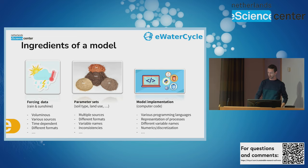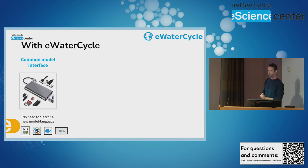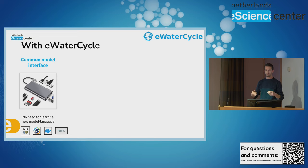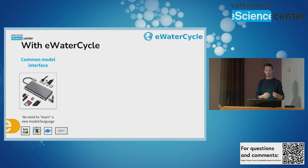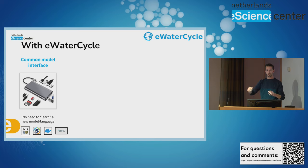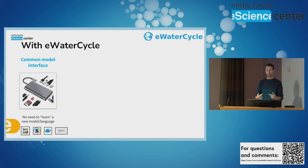That's what we're trying to address in eWaterCycle. First, we have a common model interface. For those not familiar with the technologies, this means you can talk to your model from within a Python notebook and exchange it for another model — the way you talk to the model will be the same, for example using model.update() to advance one time step. We achieve this by packaging all models inside Docker containers, wrapping them with an interface package called BMI (the Basic Modeling Interface), and communicating via gRPC. Even if the models are written in Fortran or C, we can use them in Python and they all look the same.